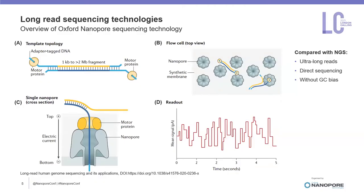With the rapid development of long-read sequencing technology, like Oxford Nanopore technologies, a new effective routine of structural variation detection is established for more comprehensively discovering structural variations at high resolution through long-range spanning information from read alignment.